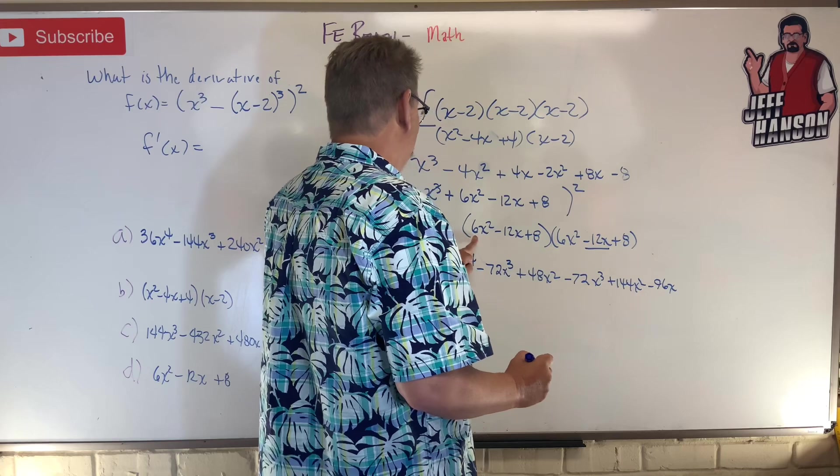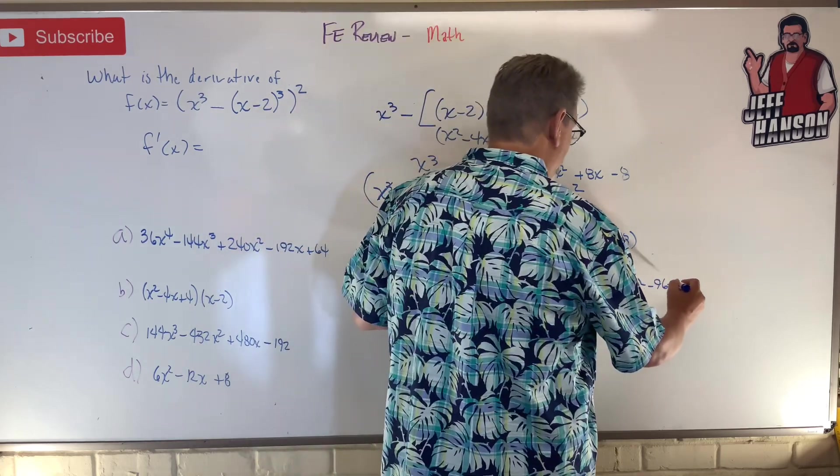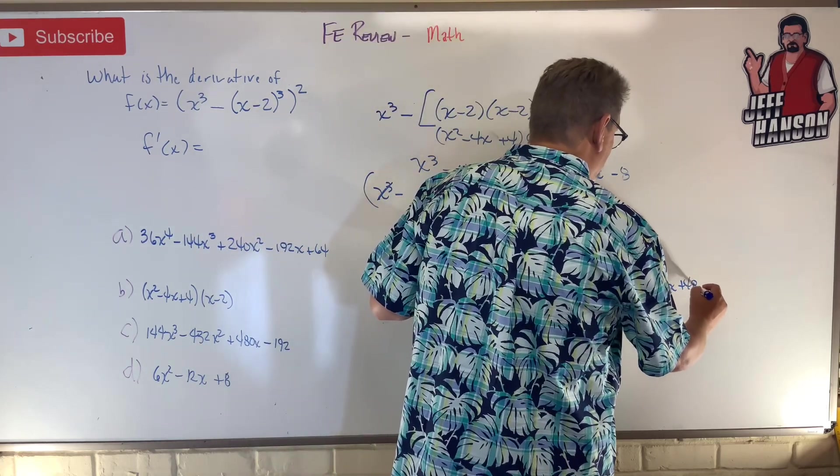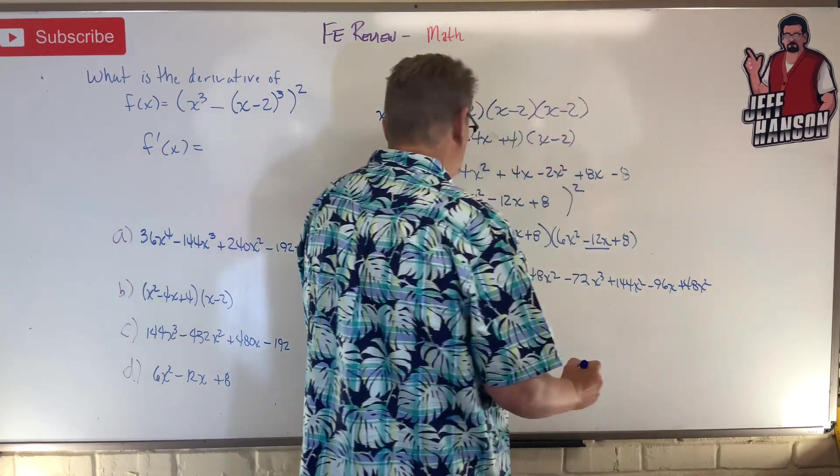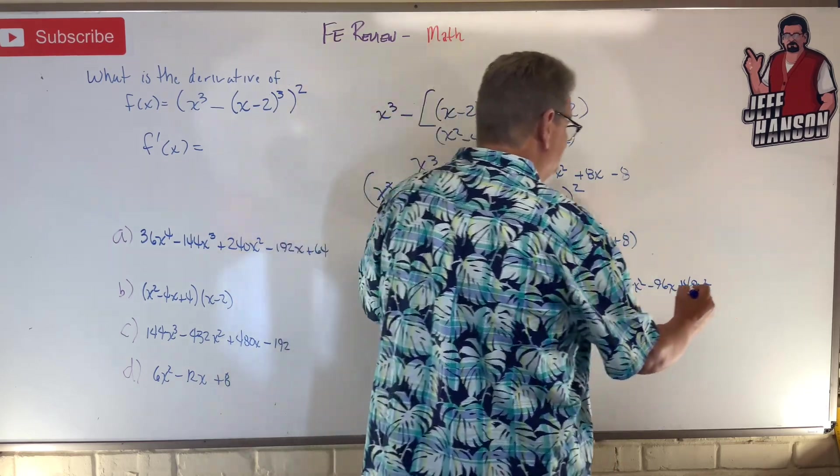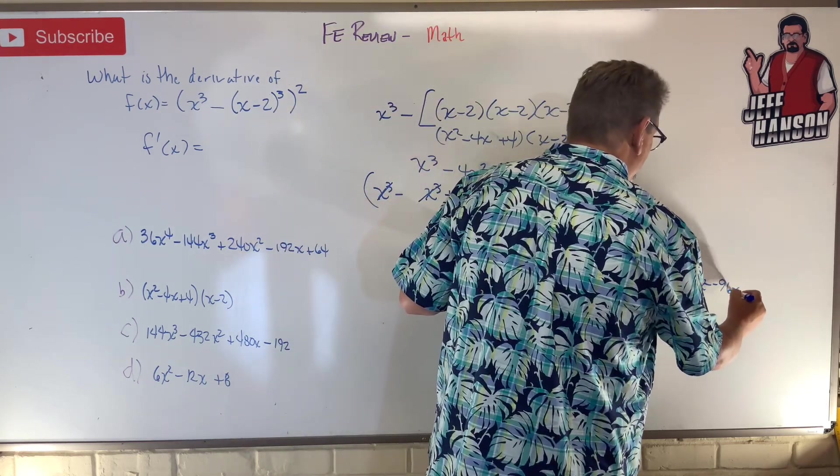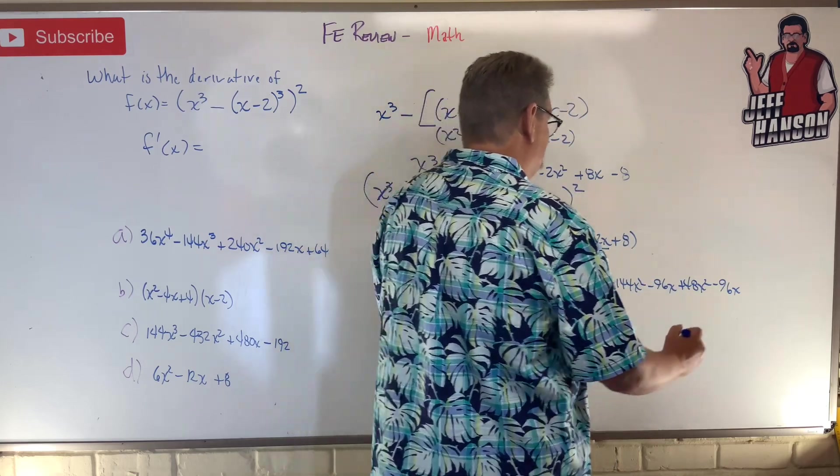This becomes 48x² minus 96x plus 64. Holy gross banana Batman.